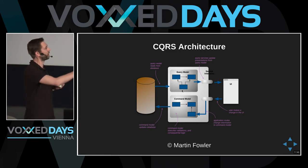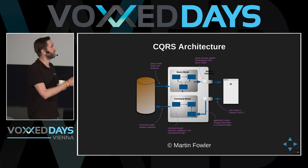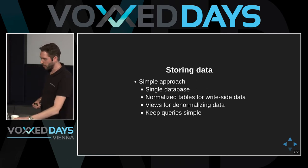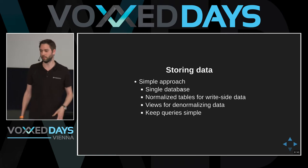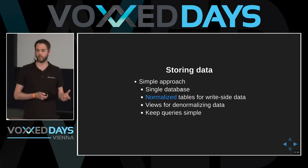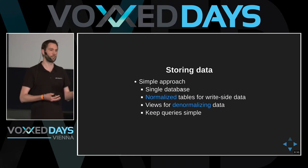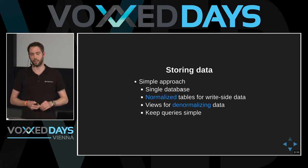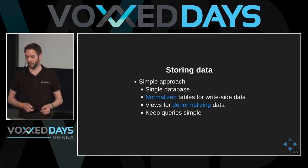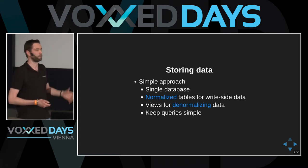When the user wants to change something from the UI, it goes via the command. The state is updated and gets persisted, then read back from the database via the query model. Looking at the simplest approach, it's just using a single database — on one side, normalized tables for writing data; on the other side, denormalized views to get data from different tables that you can easily query. The good part is you can keep queries really simple and fast, and really optimize in the database.